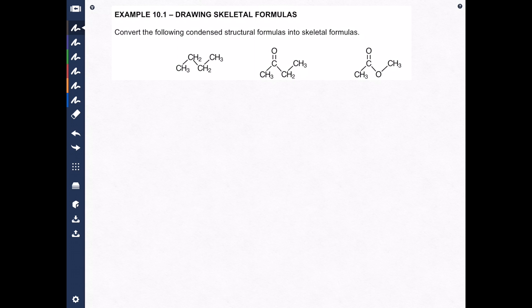If we take a look at this example, we see that we have some condensed structural formulas drawn out. We need to take these condensed structural formulas and convert them into skeletal formulas. The skeletal formulas are essentially the line drawings that are much easier to look at once you get the hang of them, but you have to understand what they mean in order to get the hang of it.